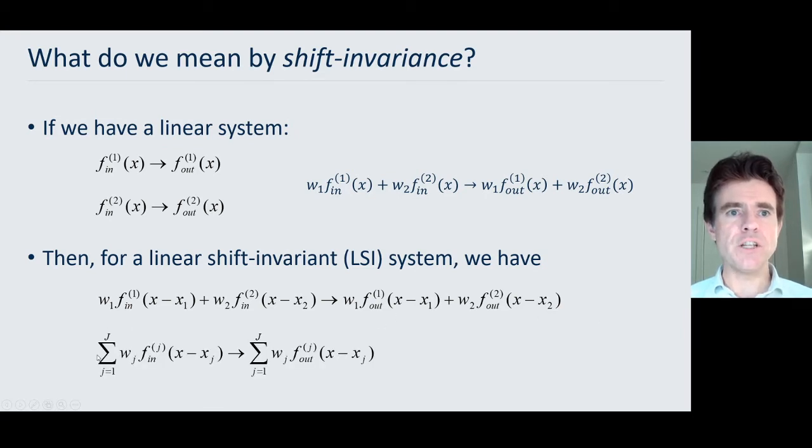And so in general, for a linear shift invariant system, that means a weighted amount of a particular input function, when you slide it left or right, when you shift it around in space, we can predict what the output would be, because the output would be the same, but just also shifted according to the shift of the input function, and of course, with the weight preserved as well. And you can do that by adding together many such shifted functions, and then the overall output will be the sum of all the shifted outputs that we would have obtained from the individual input functions. So really, this shift invariance is like an extra property on top of that of linearity.